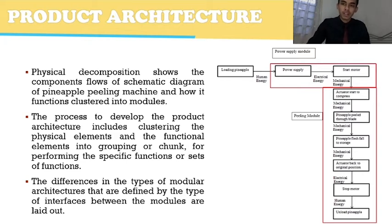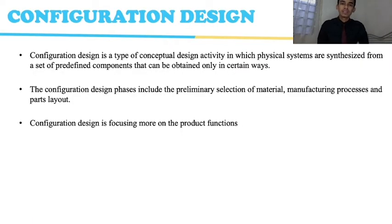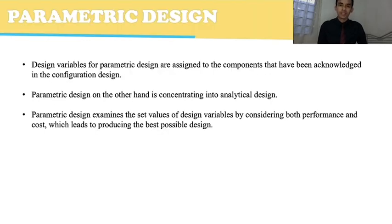The difference in the type of modular architecture is defined by the type of interface between the two modules. As we can see, the first column contains the power supply module and the second column also contains the power supply module. Configuration design is a conceptual design activity in which physical systems are synthesized from a set of predefined components. The configuration design phase includes the preliminary selection of material, manufacturing process, and part layout, focusing more on the product function.